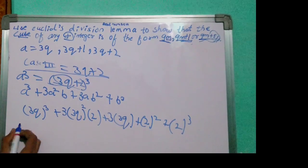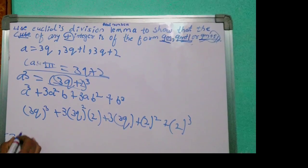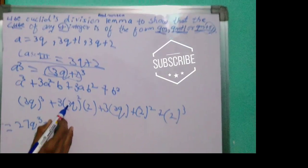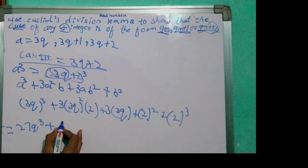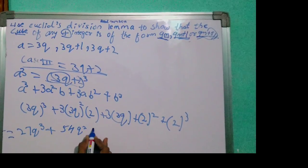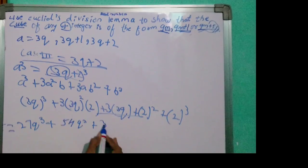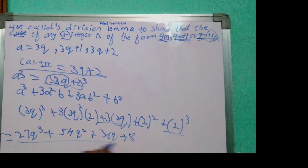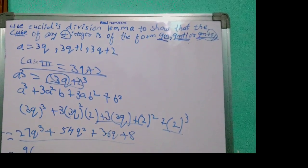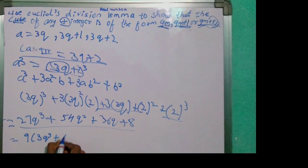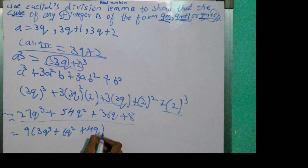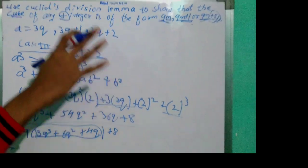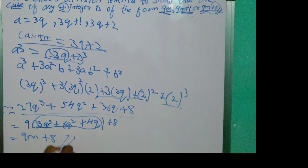Expanding: a cubed equals 27q cubed plus 54q squared plus 36q plus 8. Taking 9 as common from the first three terms, we get 9 times (3q cubed plus 6q squared plus 4q) plus 8. Since that bracket is an integer m, we can write this as 9m plus 8. This is proved.